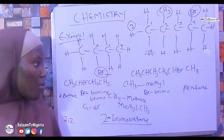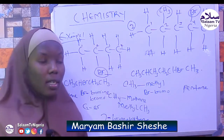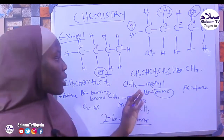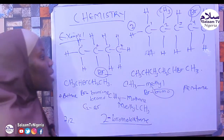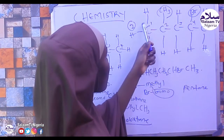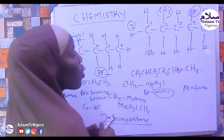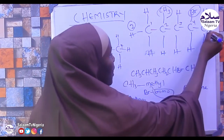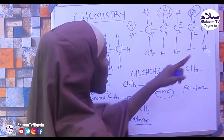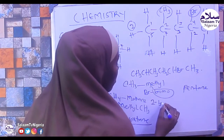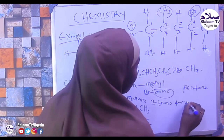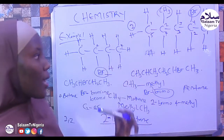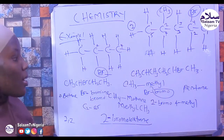We list the substituents alphabetically. Between methyl and bromo, B comes first alphabetically, so bromo comes before methyl. Numbering from one end: if we number from 1, 2 — methyl is at position 2 and bromo is at position 4. So we get 4-bromo-2-methylpentane.